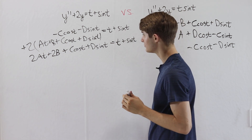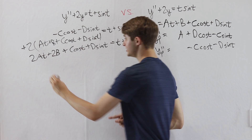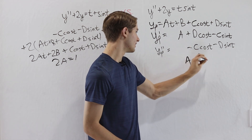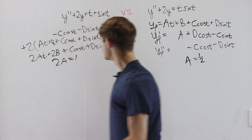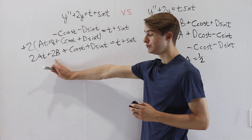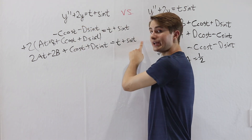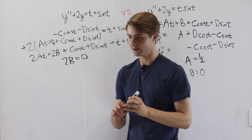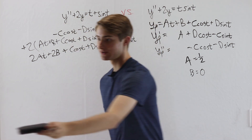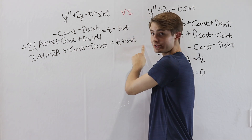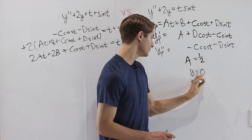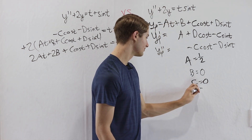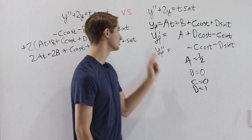Matching coefficients: looking at the t terms, 2a equals 1, so a equals one half. For the constants, 2b equals 0, so b equals 0. For cosines, c cosine t equals 0 (no cosines on the right), so c equals 0. Finally, d sine t equals sine t, so d equals 1. We've found all the coefficients for our particular solution.